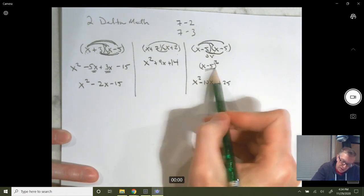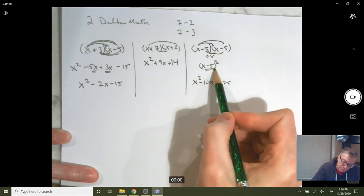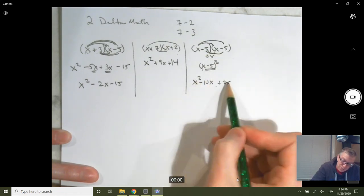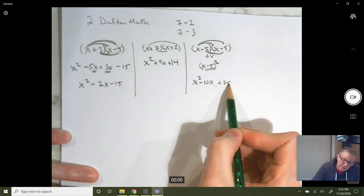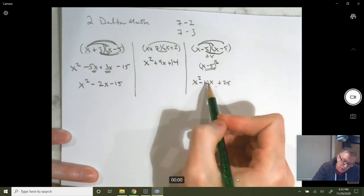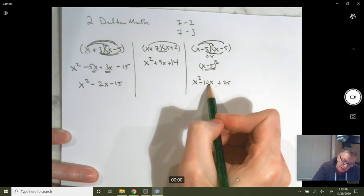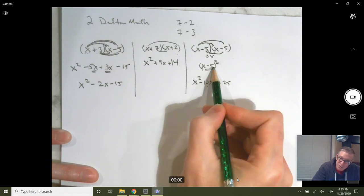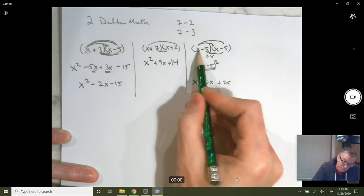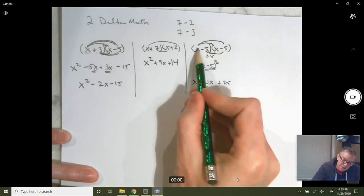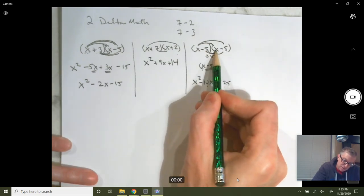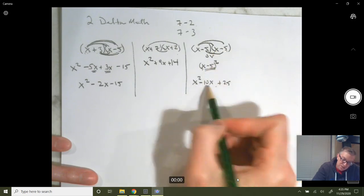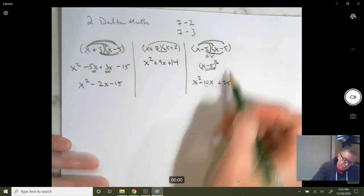Anytime you have a perfect square binomial, the first term is squared, the last term is going to be a perfect square, and the middle term is going to be double whatever these two things multiplied together are — because your outers end up being x times negative 5, and your inners end up being negative 5 times x. You have two of those, so you double it.